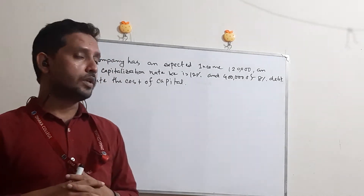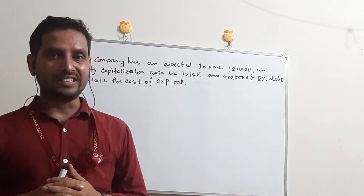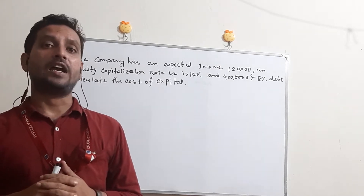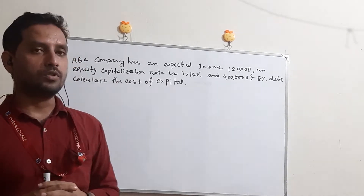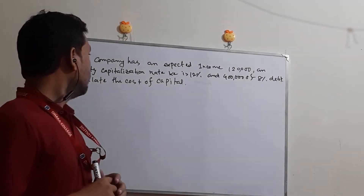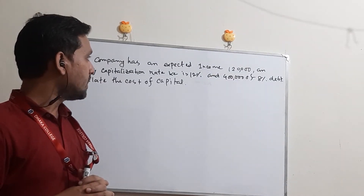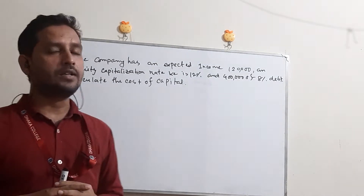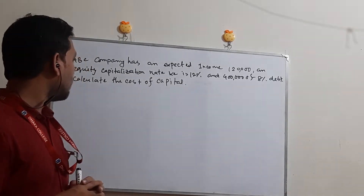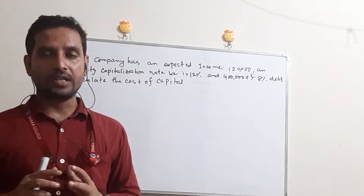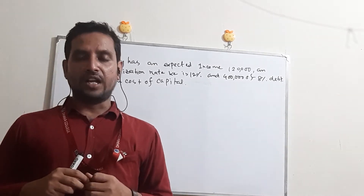Today we will learn the mathematical application of the NI approach. Let's see the question written on the whiteboard. ABC Company has an expected income of 1 lakh 20,000 taka. The equity capitalization rate Ke is 12%, and there is 4 lakh of 8% debt. We need to calculate the cost of capital, or weighted average cost of capital.